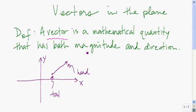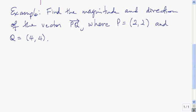The magnitude of the vector is just the length of the line segment, and the direction of the vector is often measured counterclockwise from the horizontal. Let's see a concrete example — let's find the magnitude and direction of a vector.